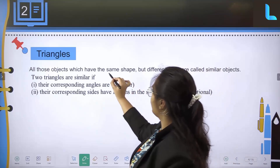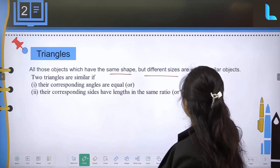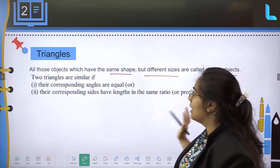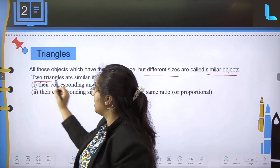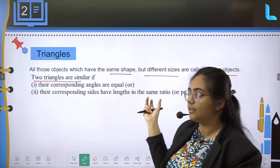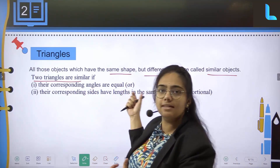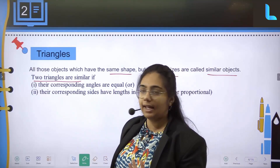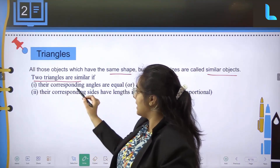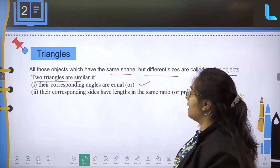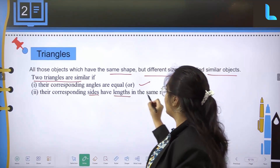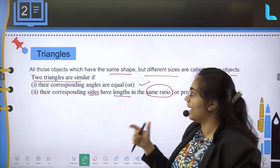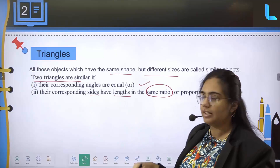All those objects which have the same shape but different sizes are called similar objects. For triangles, their corresponding angles are equal and their corresponding sides have lengths in the same ratio. So, angles will be equal and their corresponding sides will have the same ratio.